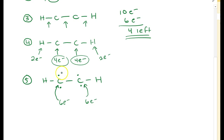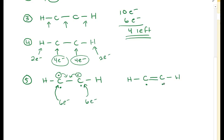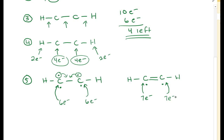What we want to do is take one electron from one carbon and one electron from the other carbon and share them to make another bond. We now form a double bond between the two carbons. Let's check: each carbon now has three bonds, which counts as six electrons, plus one remaining lone electron, giving seven electrons. Both carbons still only have seven electrons, so they're still not stable.